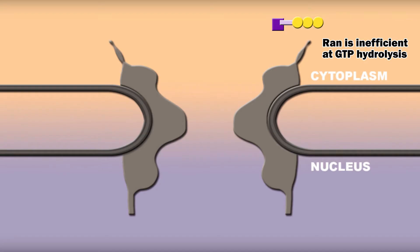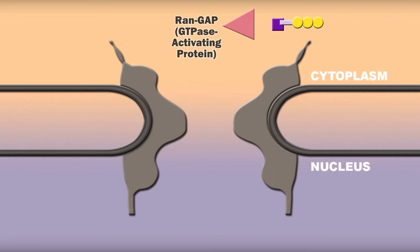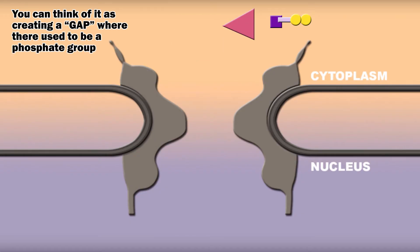Firstly, RAN is inefficient at GTP hydrolysis. Hence, RAN-binding protein, RBP, not shown here, and RAN-GAP must work together to hydrolyze GTP and release the nuclear import receptor. An easy way to remember RAN-GAP is to think of it as literally creating a gap where there used to be a phosphate group.